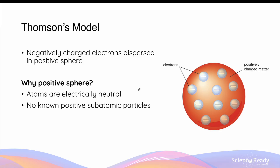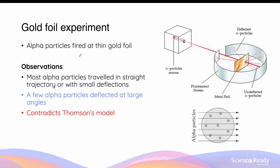However, at the time there was no experimental evidence to suggest that this positively charged matter which suspended electrons was actually correct. After Thomson's model came the gold foil experiment, in which two scientists, Geiger and Marsden, fired alpha particles at a thin gold foil. They observed that most of the alpha particles traveled straight through the thin gold foil with little to no deflection. And more importantly, a few of these alpha particles deflected at very large angles, as you can see by the diagram.